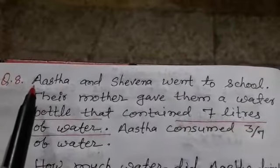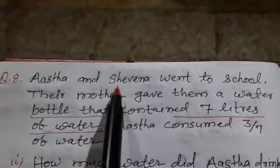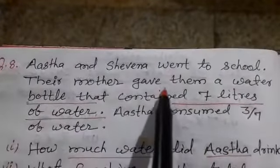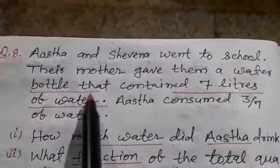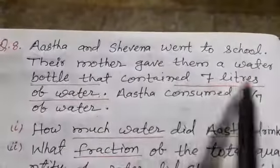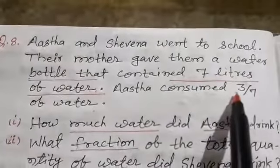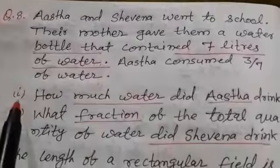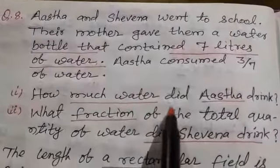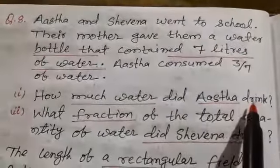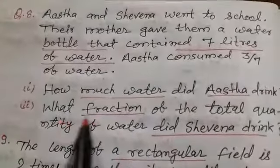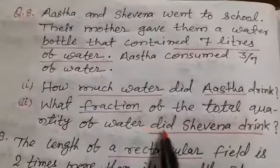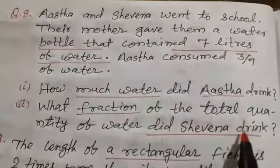Question number 8 is Aastha and Sevena went to school, their mother gave them a water bottle that contained 7 liters of water. Aastha consumed 3 by 5 of water. First part of this question is how much water did Aastha drink? And second, what fraction of the total quantity of water did Sevena drink?